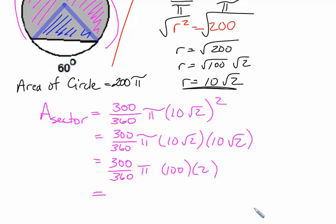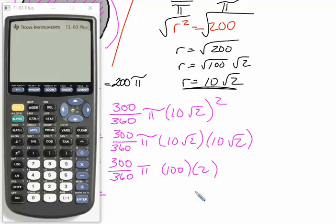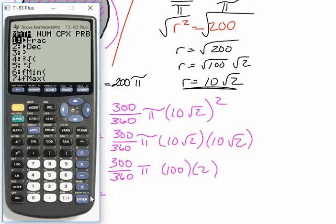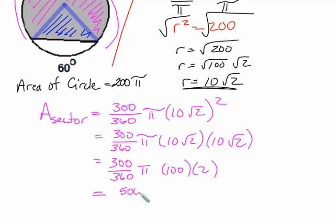And then if we want to turn to our calculator, we can. So typing this particular problem in, we would have 300 divided by 360 times 100 times 2. And I'll hit math, convert to fraction on that. It's 500 over 3. So we get 500 pi all over 3 is the area of the sector.